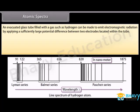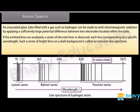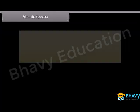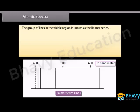Atomic spectra: An evacuated glass tube filled with a gas such as hydrogen can be made to emit electromagnetic radiation by applying a sufficiently large potential difference between two electrodes. If the emitted light is analyzed, a series of discrete lines are observed, each corresponding to a specific wavelength. Such a series of bright lines on a dark background is called an emission line spectrum. When white light passes through a gas, the transmitted light shows dark lines called the absorption line spectrum.